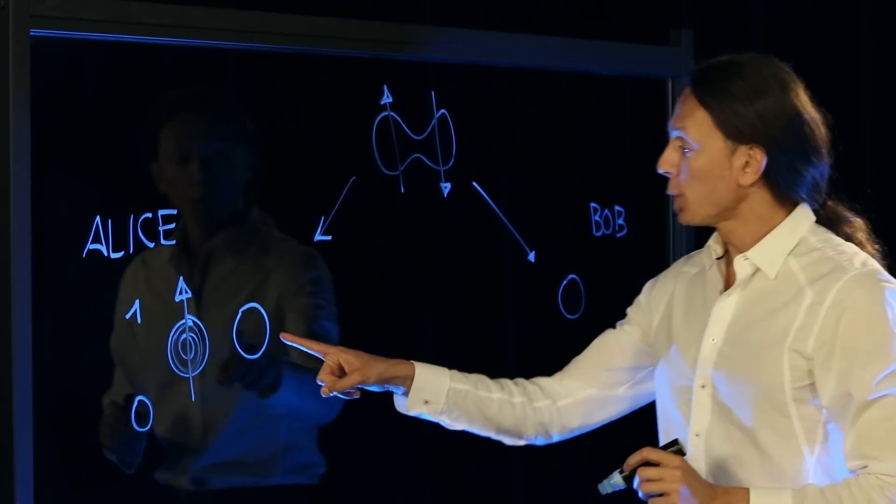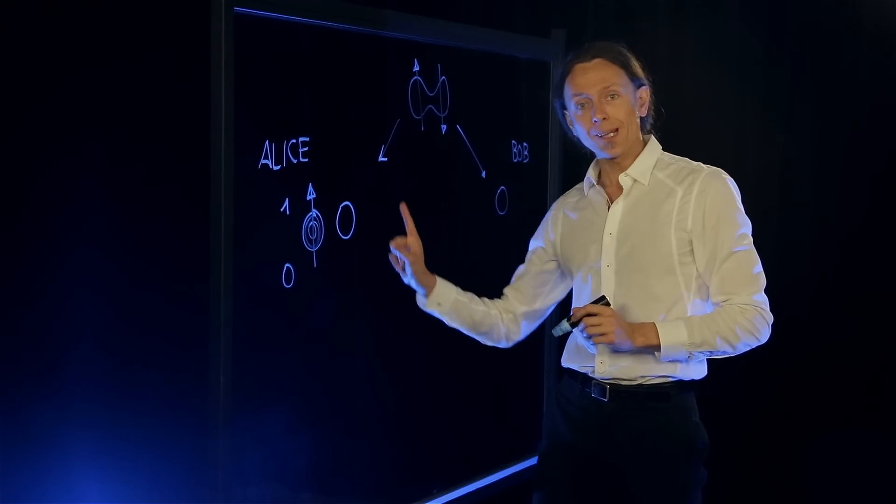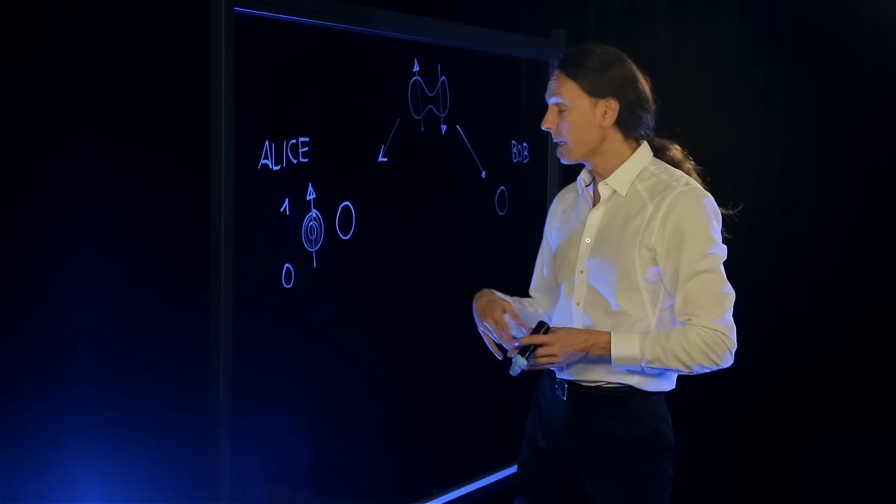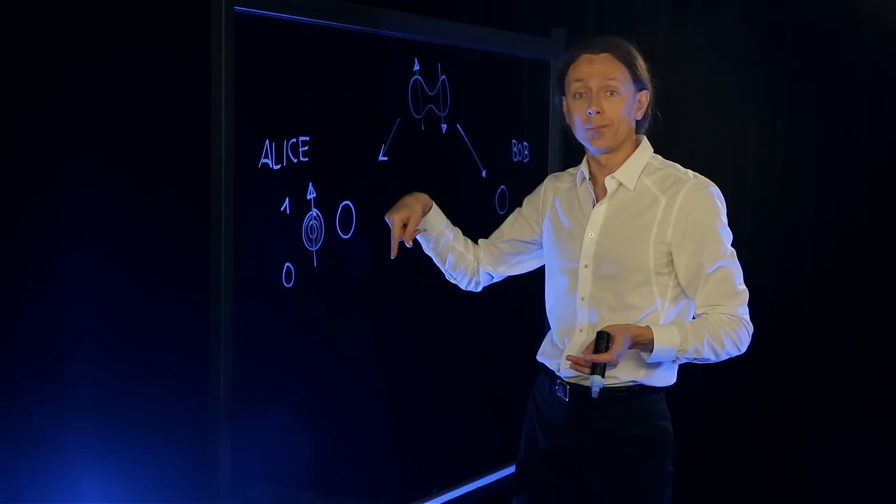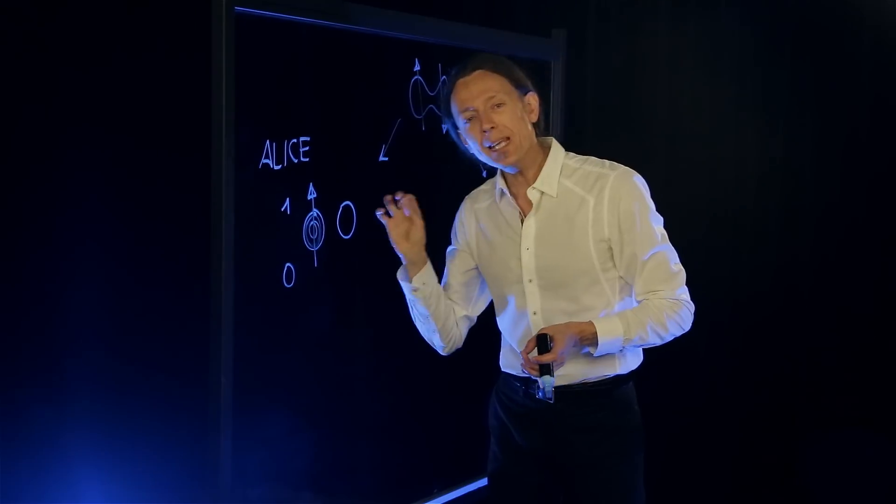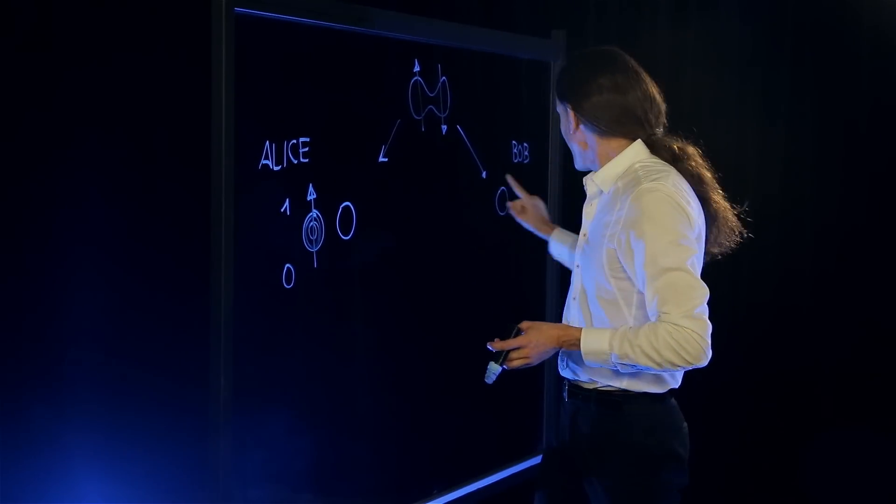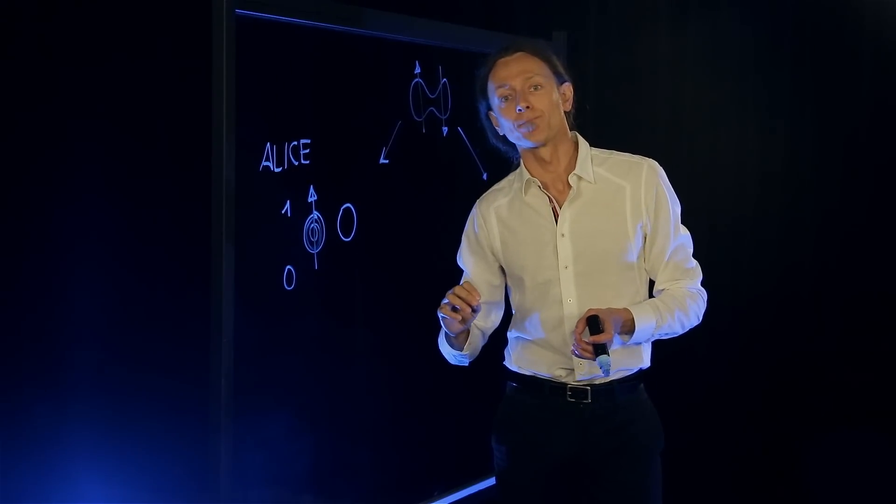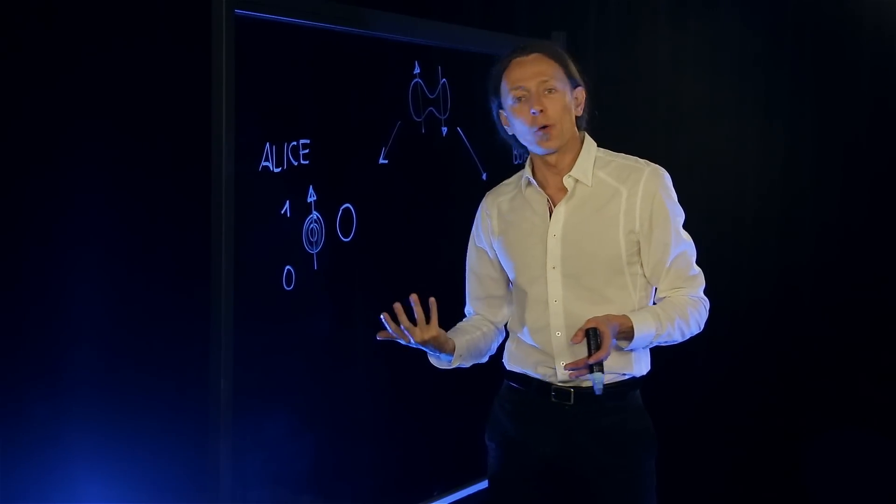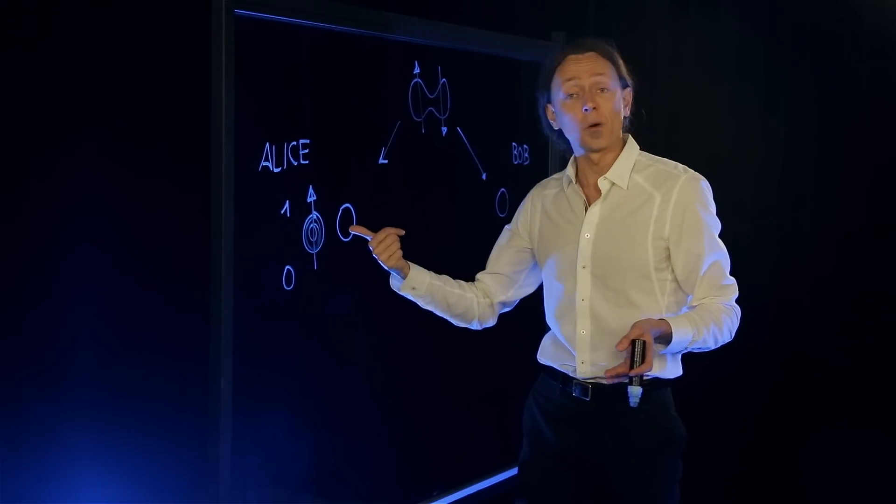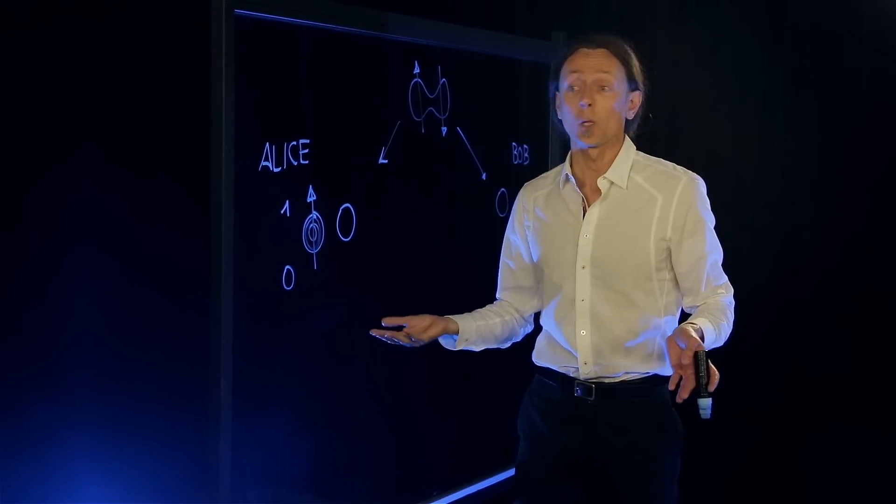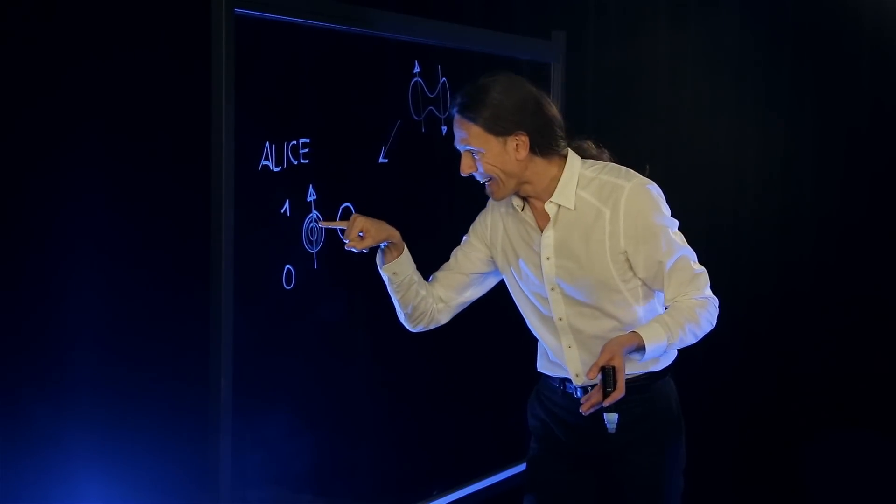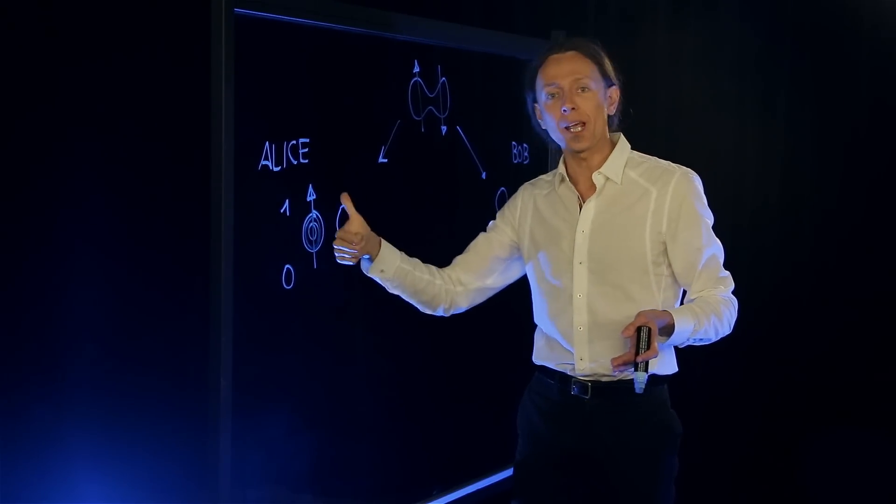Now if Alice were to measure the orientation of this electron she just received, she would find it randomly either up or down. And she would know immediately that the orientation of Bob's electron is the opposite of the one she has found. But this doesn't allow her to communicate anything because the outcome of this measurement is completely random. What she really wants to do is to transmit this electron spin orientation to Bob.